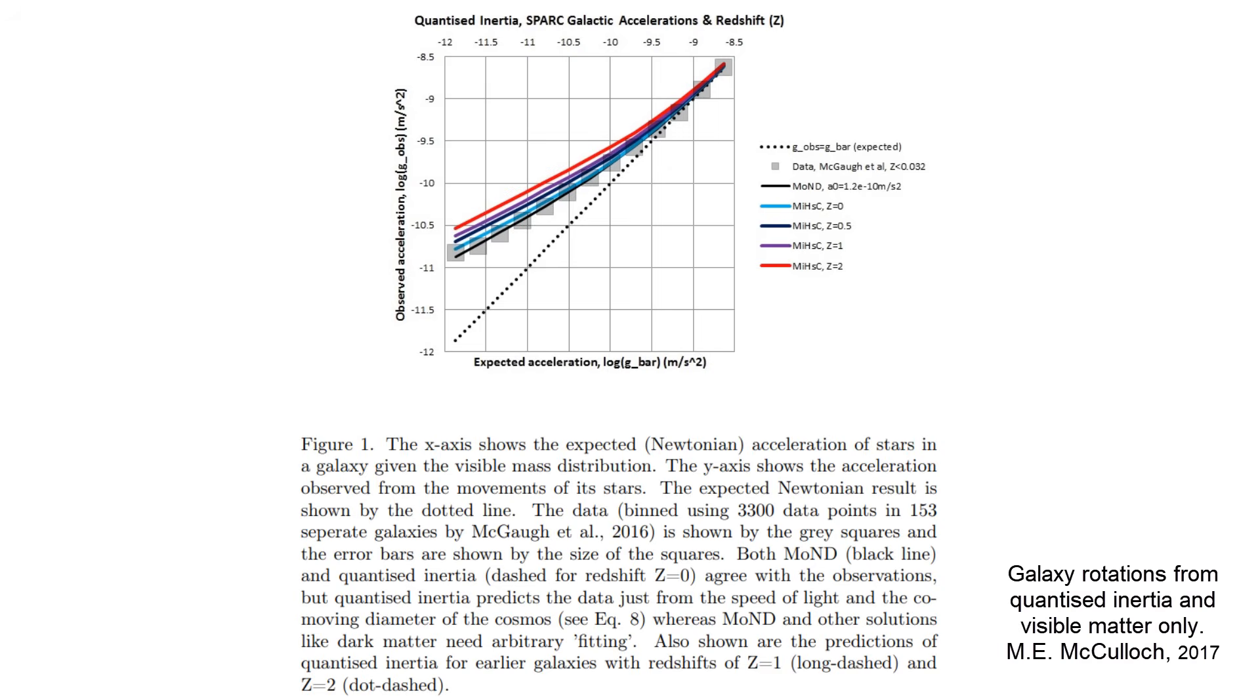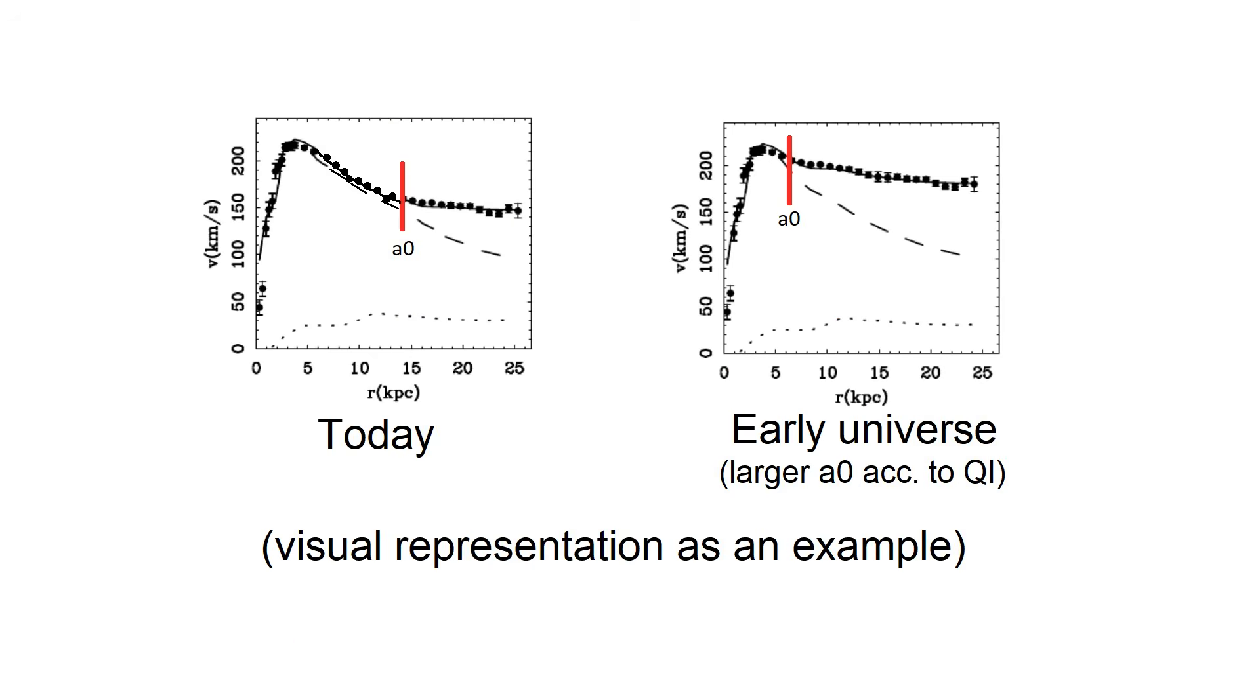If the acceleration scale depended on the size of the universe according to Quantized Inertia, this would make galaxies show greater mass discrepancies starting at a greater acceleration scale, and thus overall faster spins at the early universe.